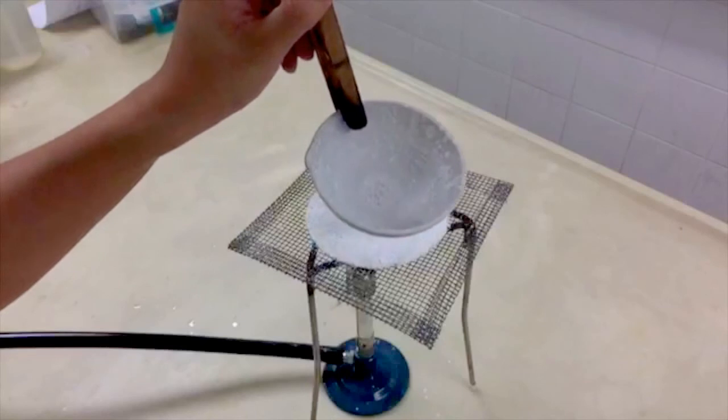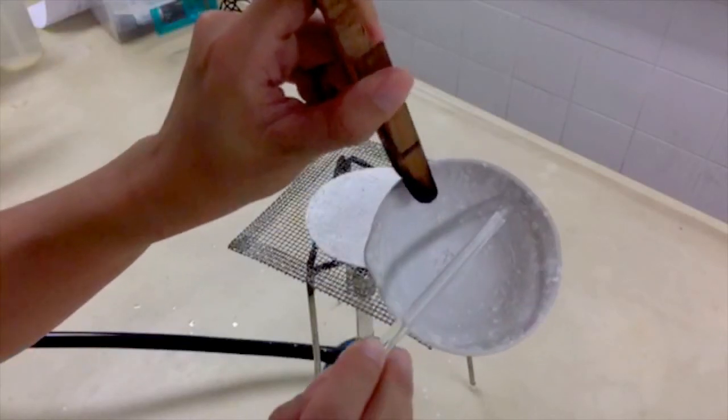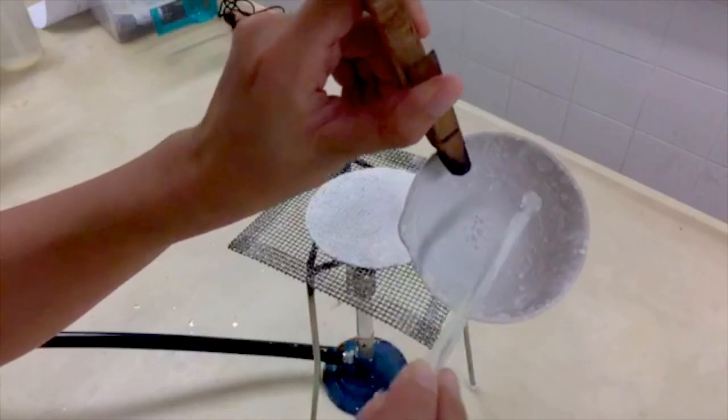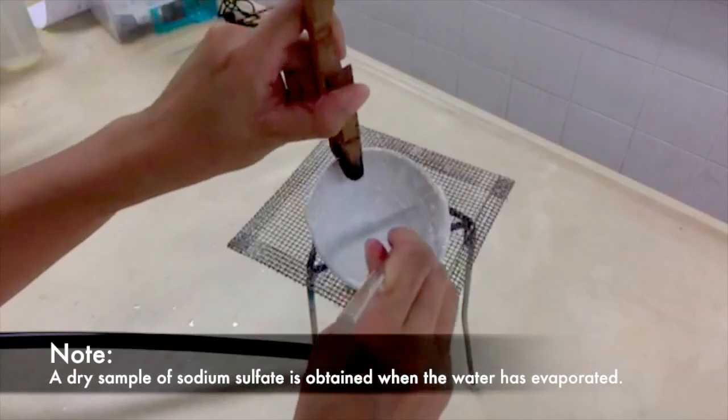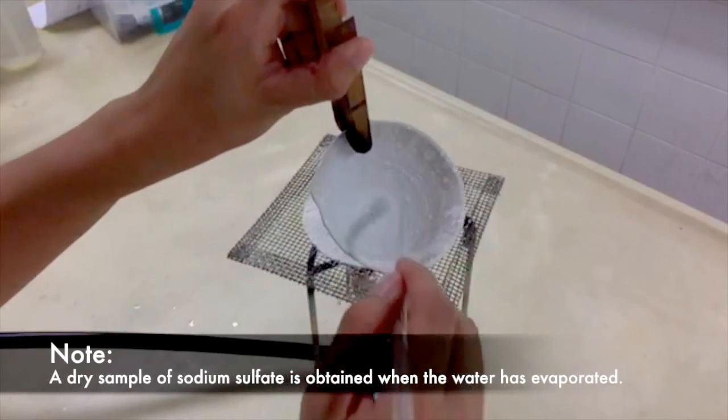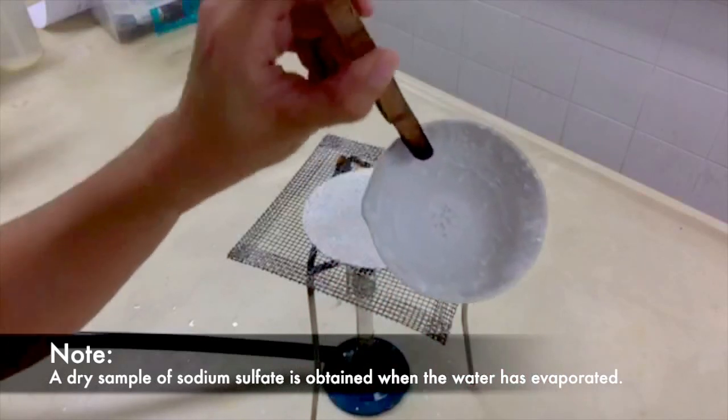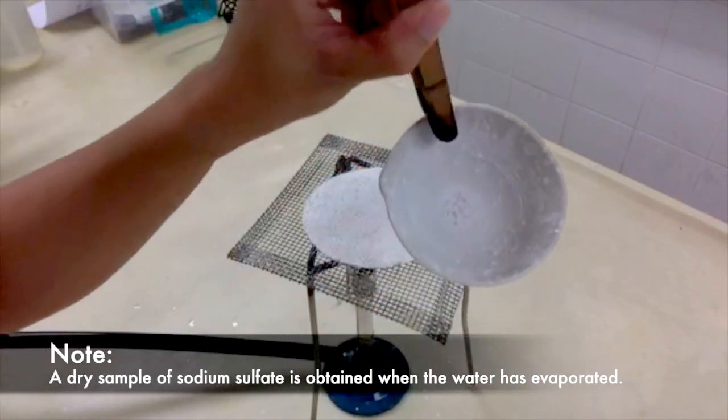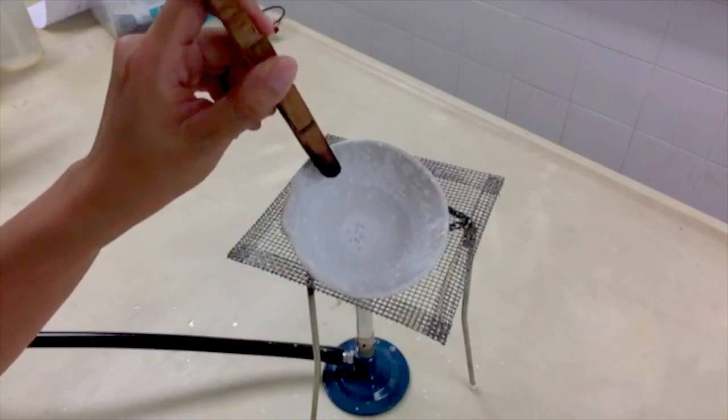Now you will have to heat it till all the water in the solution has evaporated. Once all the water has evaporated, turn off the flame and you will be able to see all the salt that is at the side of the evaporating dish. When your evaporating dish has cooled down, you will be able to scrape all the salt off the dish and you can collect the salt - this salt is known as sodium sulfate. And with that we have come to an end of this experiment.